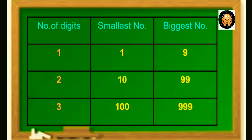The smallest 1 digit number is 1 and the biggest 1 digit number is 9. The smallest 2 digit number is 10 and the biggest 2 digit number is 99. The smallest 3 digit number is 100 and the biggest 3 digit number is 999. So we are familiar with unit place, 10th place and 100th place, and we also know to read and write 3 digit numbers.